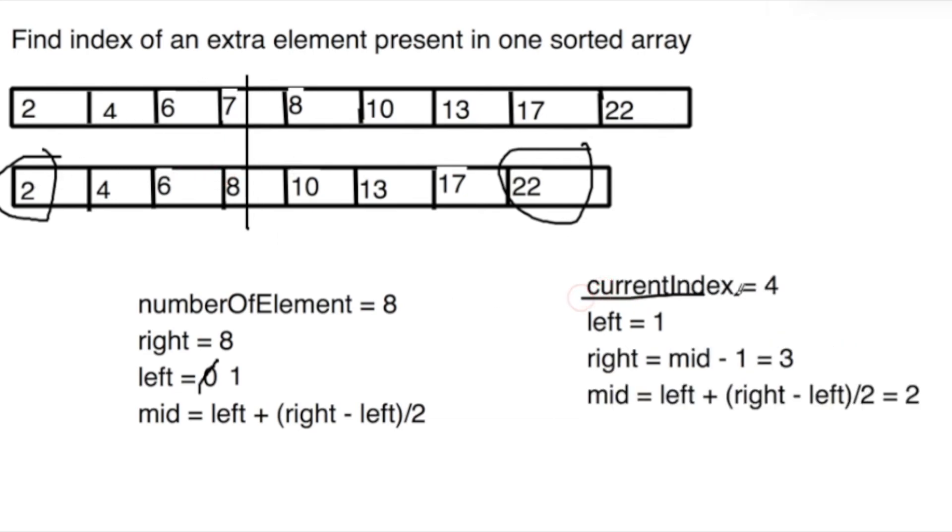We assume that the current element index 4 is the one which doesn't match, so now we will continue our search on the left part of the array. The left is still 1, and we will recalculate right, which will be mid minus 1, the previous mid minus 1, so which is 3. Now we will calculate the new mid.